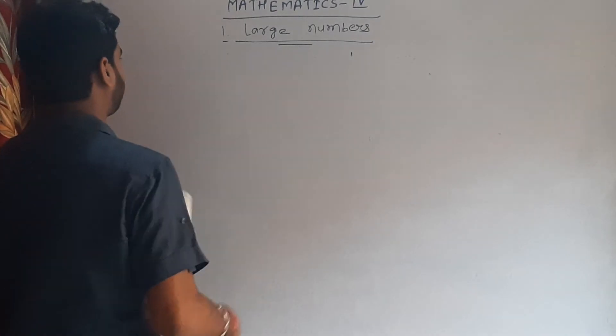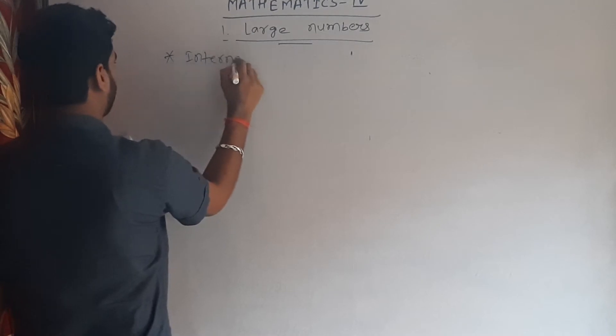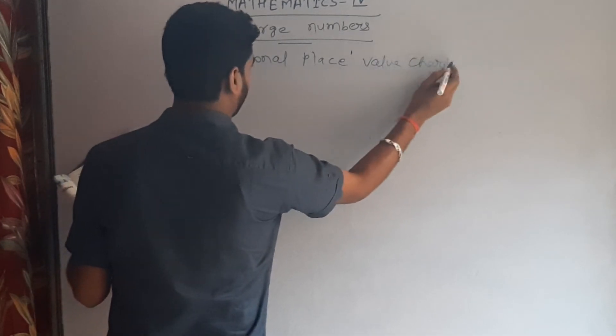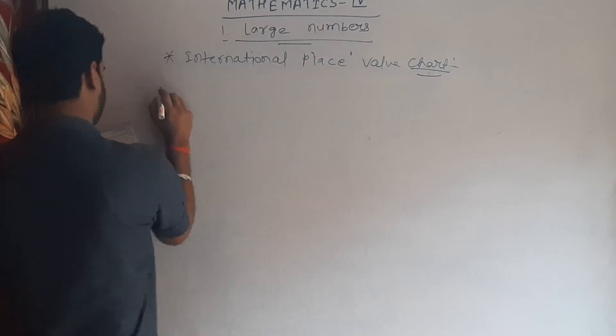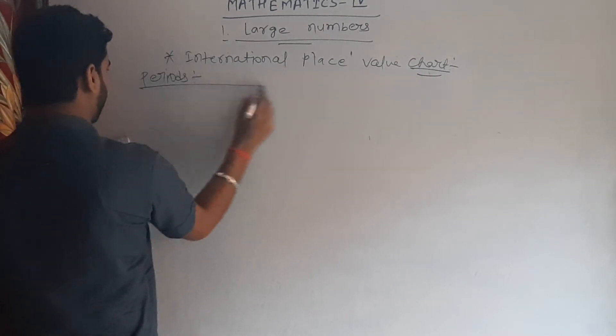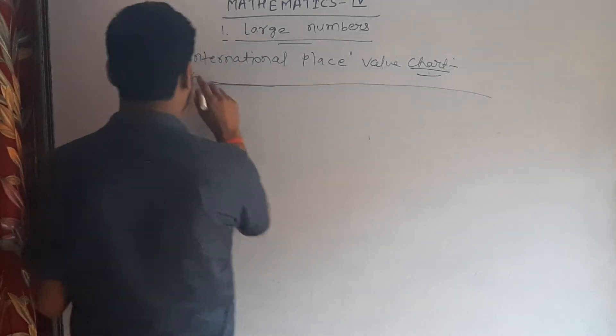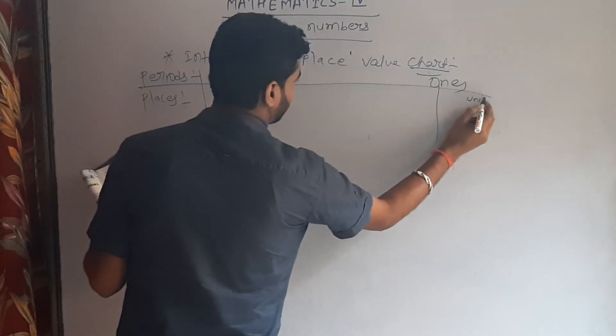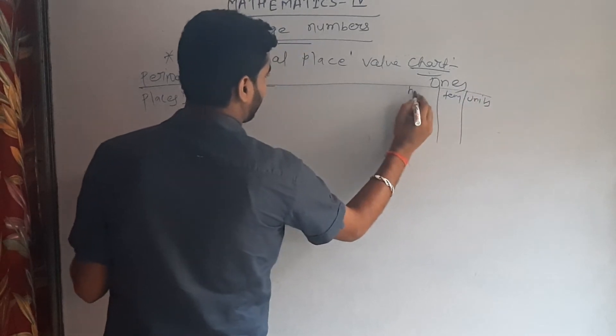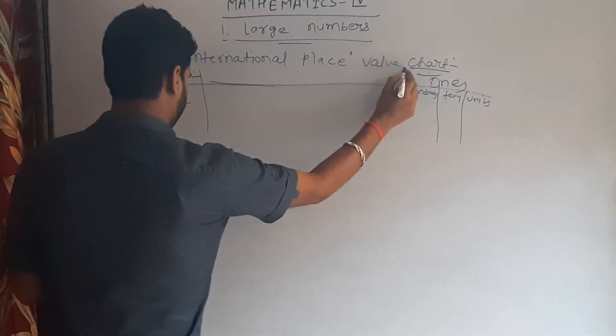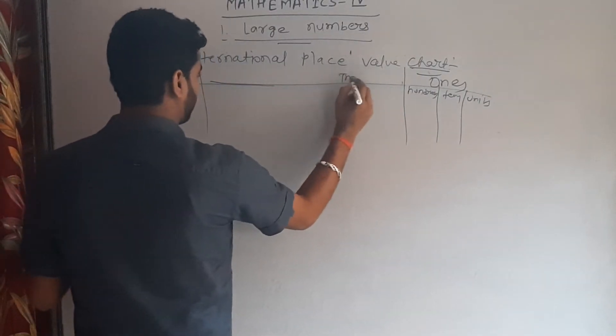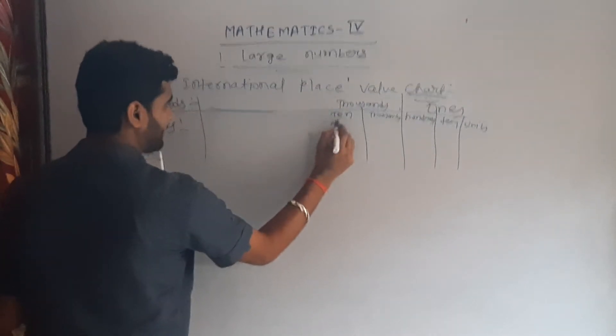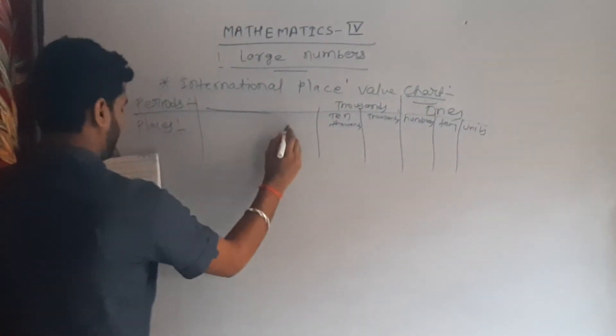Now second, international place value chart. Periods and places: in one period there are units digit, tens digit, and hundred digit. In thousands period, thousand digit, ten thousand, and hundred thousand.